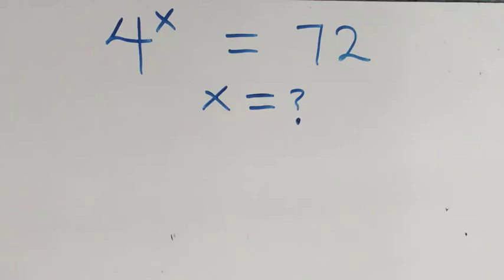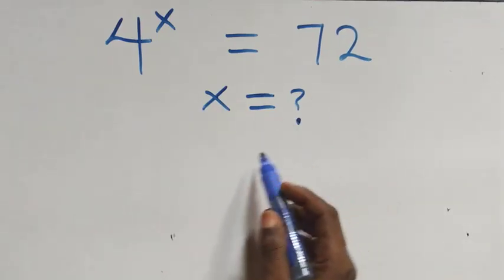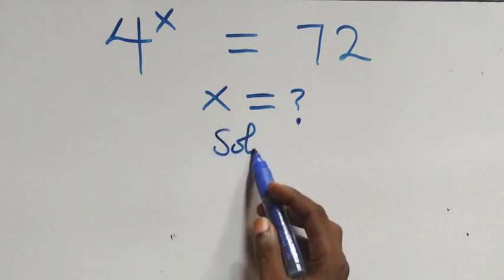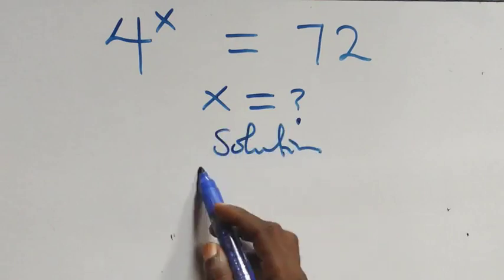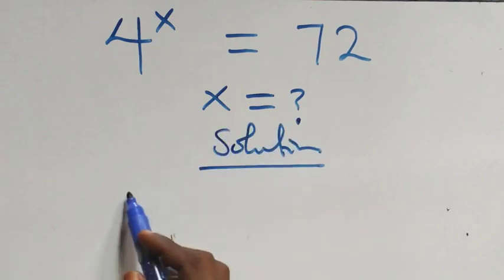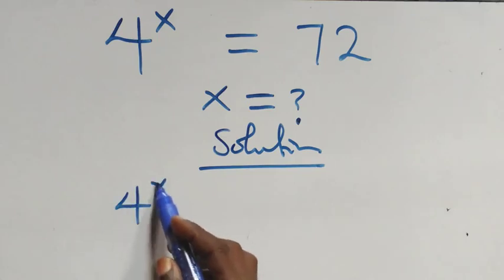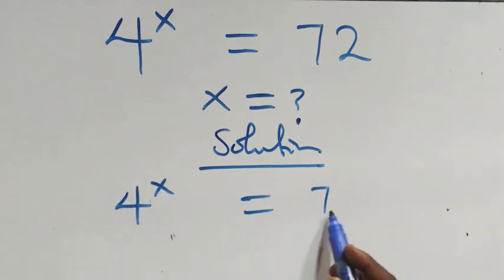Hello, you are welcome. How to solve this nice exponential equation. What we have here is four raised to the power x equals to seventy-two.